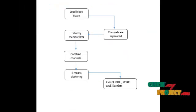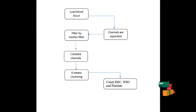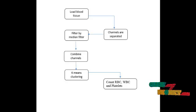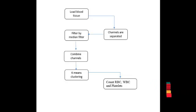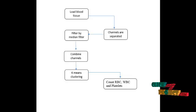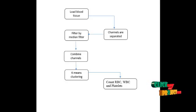Let us discuss the flow of the project: segmentation using morphological watershed transformation for counting blood cells. Initially, the blood tissue image is loaded as input, and then channel separation is performed as the pre-processing step.